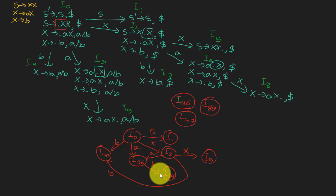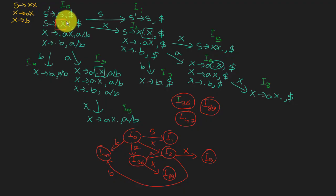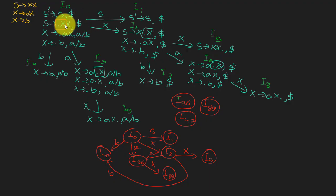The problem with computing LALR by hand is that even though it produces a smaller automaton than LR1, you still have to compute the full LR1 automaton first and then derive LALR from it. To summarize the look-ahead concept: whenever you apply closure and get new states, look at the symbol with a dot before it, and take FIRST of all remaining symbols after it — that becomes the look-ahead.